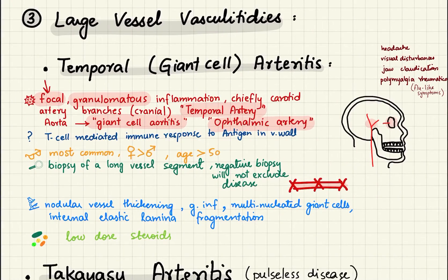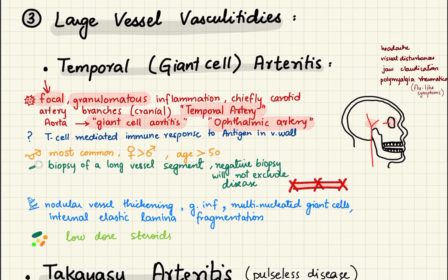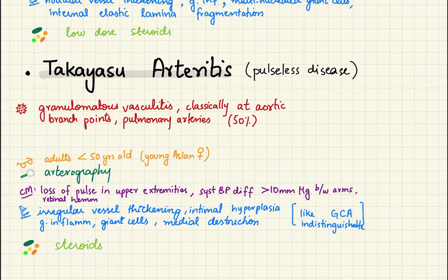Lastly, large vessel vasculitides include temporal arteritis and Takayasu's arteritis. Temporal arteritis is a giant cell arteritis — on histology it contains multi-nucleated giant cells. The temporal artery, ophthalmic artery, or aorta are chiefly involved, leading to respective symptoms. Females are most commonly affected. Remember that a negative biopsy does not exclude disease because this condition is focal — you may biopsy an unaffected segment.